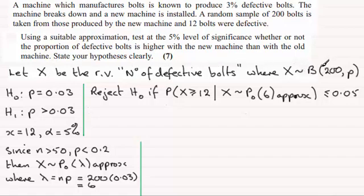X was distributed as a binomial distribution. Number of trials was 200, and the probability of getting a defective bolt I just called P.